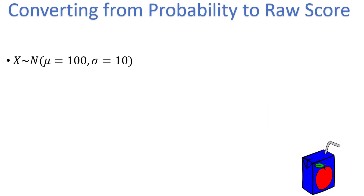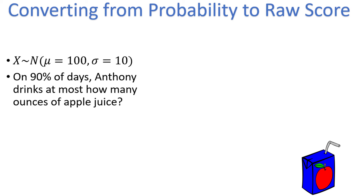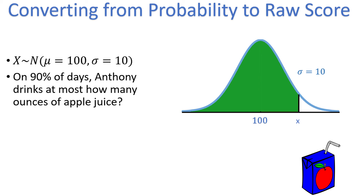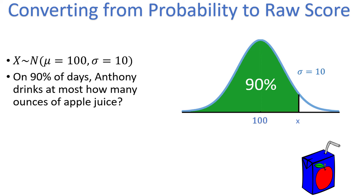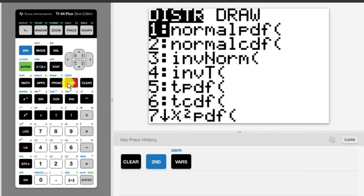We can also go backwards and translate from a probability back into the raw score — in our case, ounces of apple juice. For example, on 90% of days, Anthony drinks at most how many ounces of apple juice? Notice this question has given us a probability, 90%, and wants us to find the corresponding ounces of apple juice. We want the value x such that Anthony drinks less apple juice than x on 90% of days, so the area below our value for x is equal to 90%. Press 2nd, distribution, but this time we want inverse norm, which calculates either z-scores or raw scores depending on your inputs, so we select option 3. The area is the area to the left of your desired value, which for us is 90%, input as a decimal. If you have a TI-84 plus CE, you might get options for left, center, or right for the tail — just choose left.